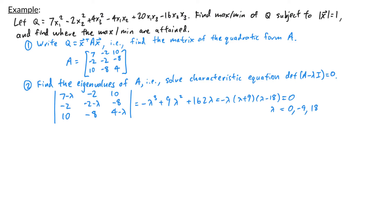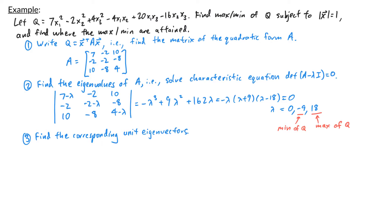At this point we can already tell what the maximum and minimum of q are. The maximum is going to be 18 and the minimum of q is going to be negative 9. Now if we want to find the input vectors x where the maximum and minimum occur, then we need to find their corresponding eigenvectors.